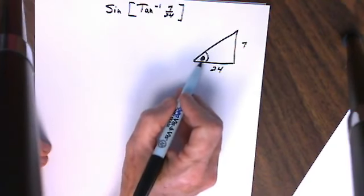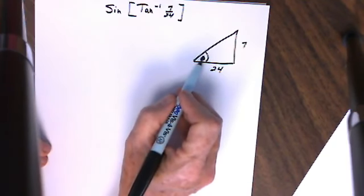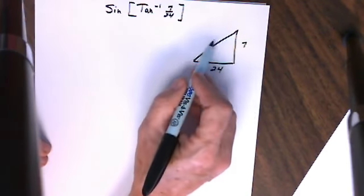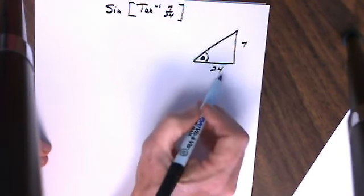Now I want to take the sine of this same angle but to take the sine of this angle I know sine is opposite over hypotenuse. I'm clearly missing the length of the hypotenuse in this right triangle.